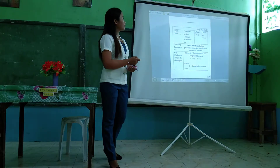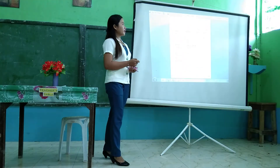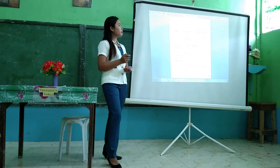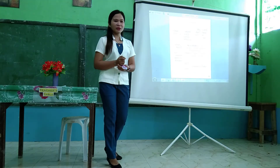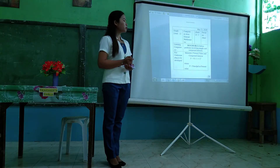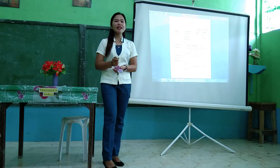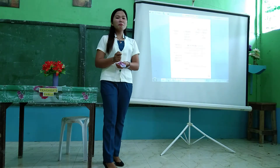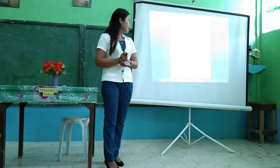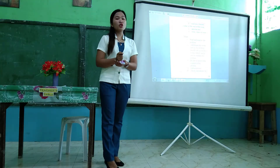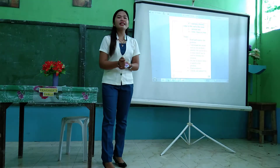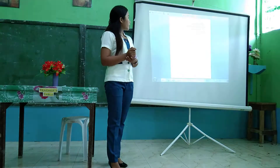This is Grade 11, component area General Mathematics, Quarter 2, duration is one hour. The learning competency is: solves problems involving simple and compound interest. The key understanding is to develop maturity value and compound interest by using the formula F = P(1 + R)^T, where P is the principal or present value, F is the maturity or future value at the end of the term, R is the interest rate, and T is the time or term in years.